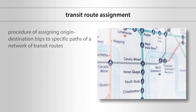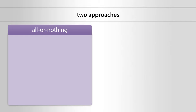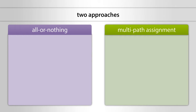Transit route assignment is the procedure of assigning origin-destination trips to specific paths or links of a network of transit routes. By so doing, transit trips, or riders, are loaded to specific routes of the system. Two main approaches applied in transit route assignment are the all-or-nothing approach and the multi-path assignment approach.